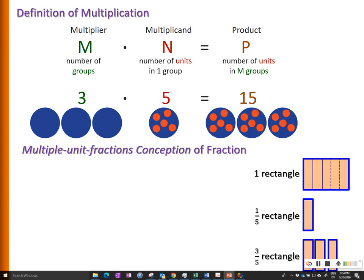This is what I call multiple-unit-fractions conception of fraction. Here I'm conceptualizing a over b as a product of a times one over b. That means there are a parts and each part has the size of one over b of a unit. So the product is just a over b of the unit.